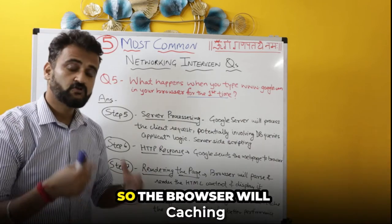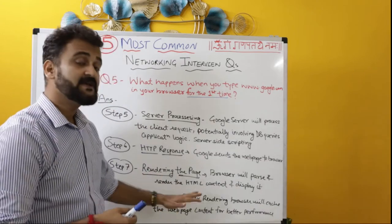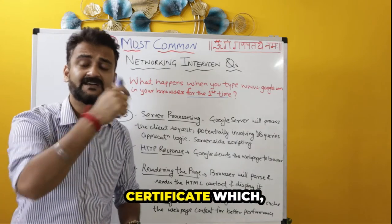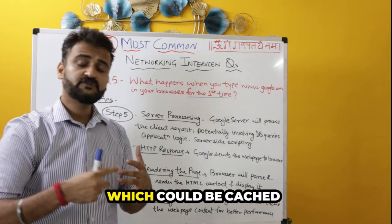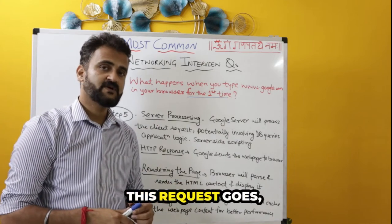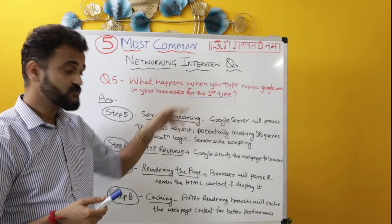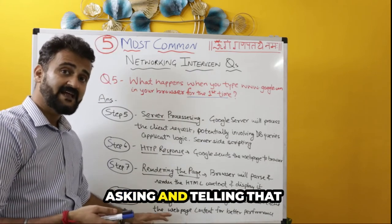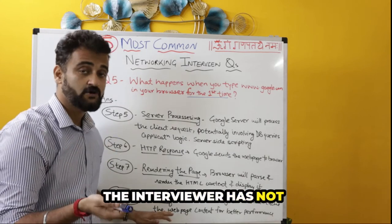Finally, at step eight, caching happens. The browser will cache whatever it is allowed to — for example, static images or the digital certificate that came in the first place — so that the next time this request is made, it is much faster. That is why we specified it is for the first time. If the interviewer has not mentioned it, you should ask and clarify whether caching has already been done.